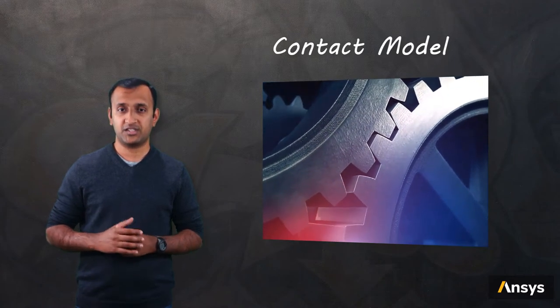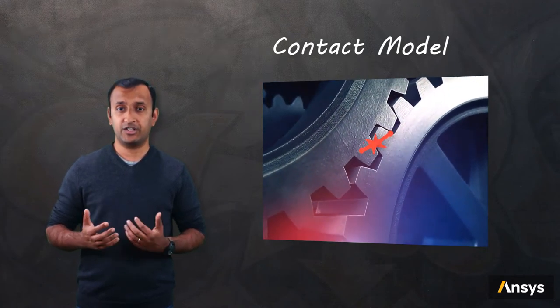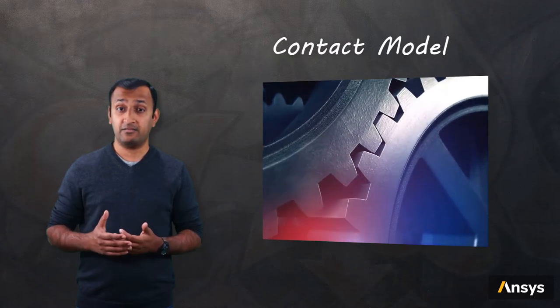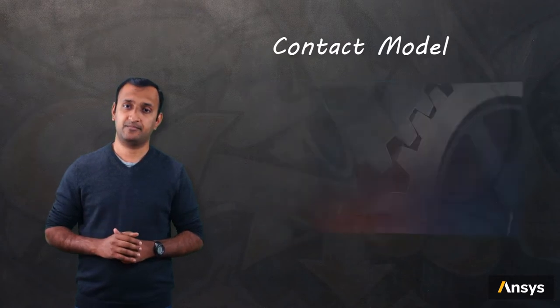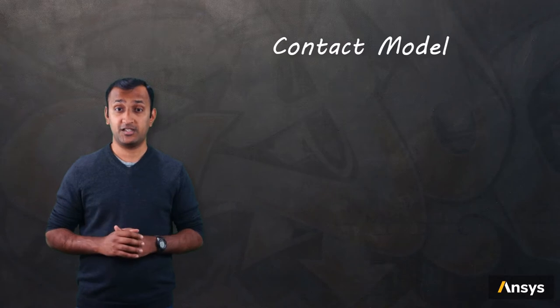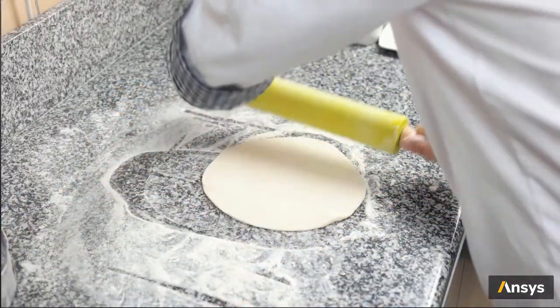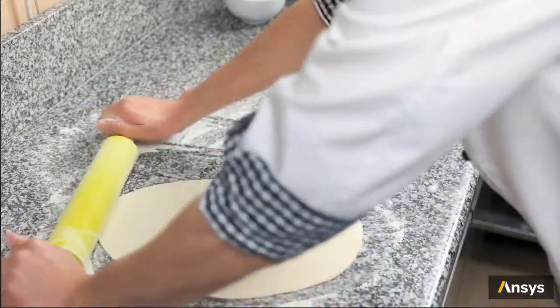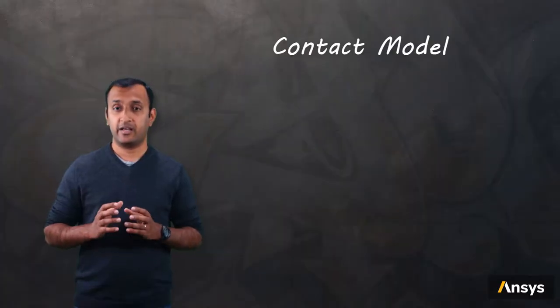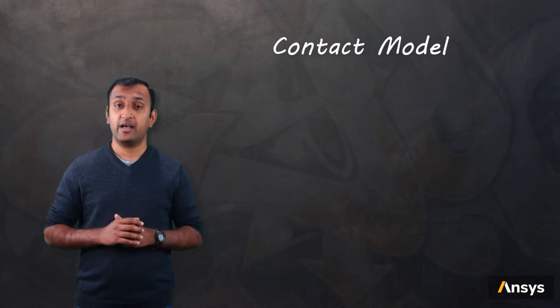When two objects come in contact, they exert forces on each other, and this is how they detect each other. In this process, they may deform each other and result in distribution of contact pressure over the area of contact. Capturing this distribution is the main objective of the contact model.